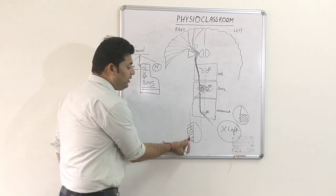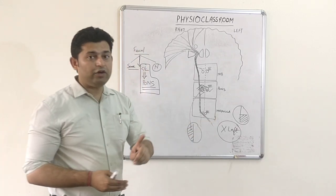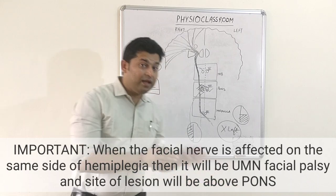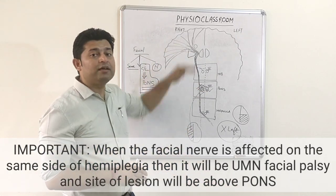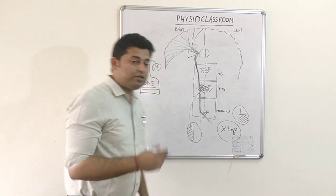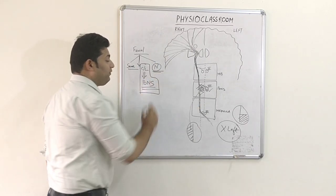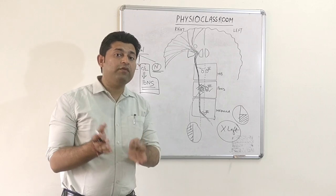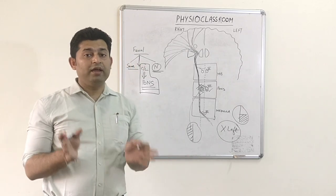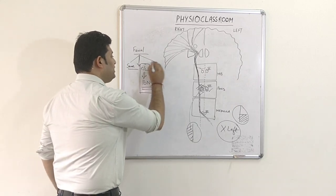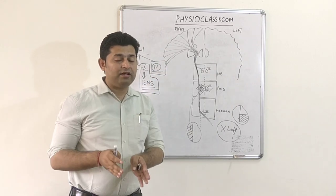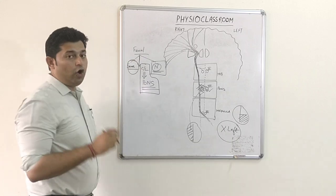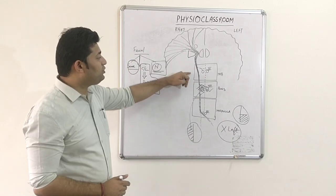To summarize: whenever facial nerve involvement is contralateral to the hemiplegia, the site of lesion is in the pons. Whenever facial nerve involvement is on the same side as the hemiplegia, the site of lesion is above the pons, which we need to determine further. The third finding — facial nerve normal — will be considered at the end of the lecture to minimize confusion. So now, with ipsilateral facial nerve involvement to hemiplegia, we progress to assess whether the lesion is in the midbrain.